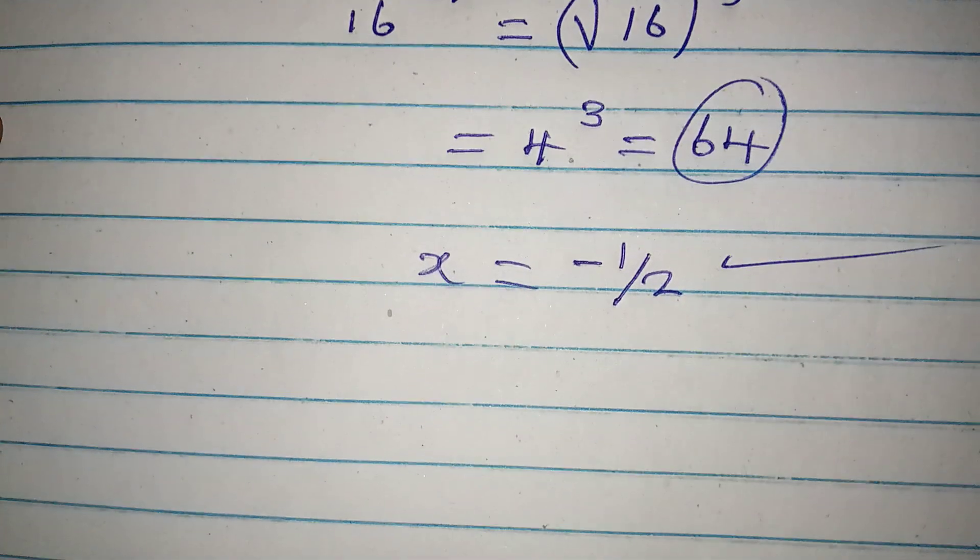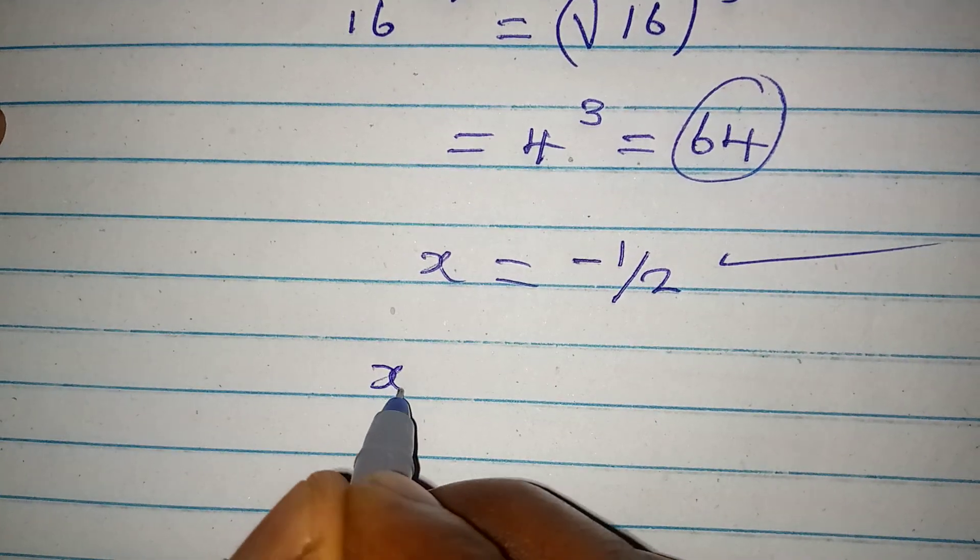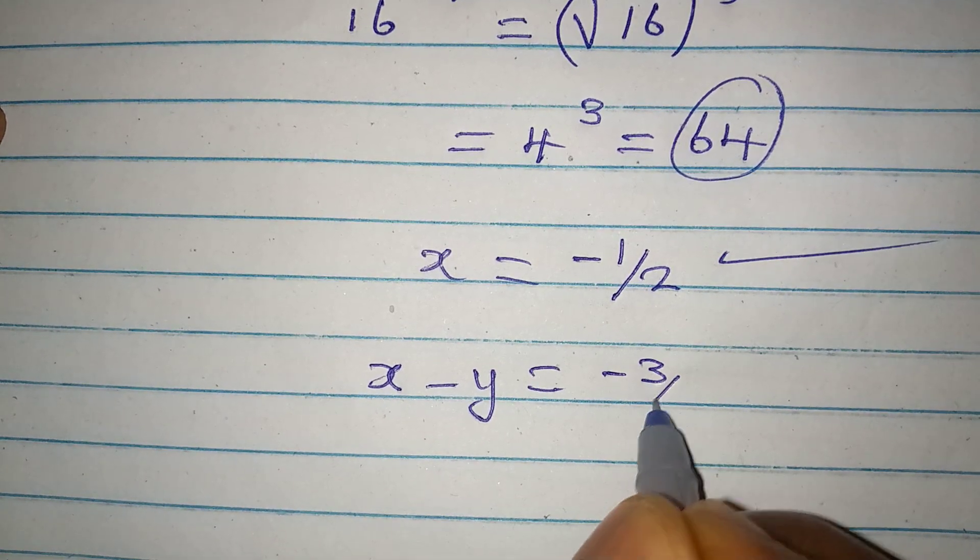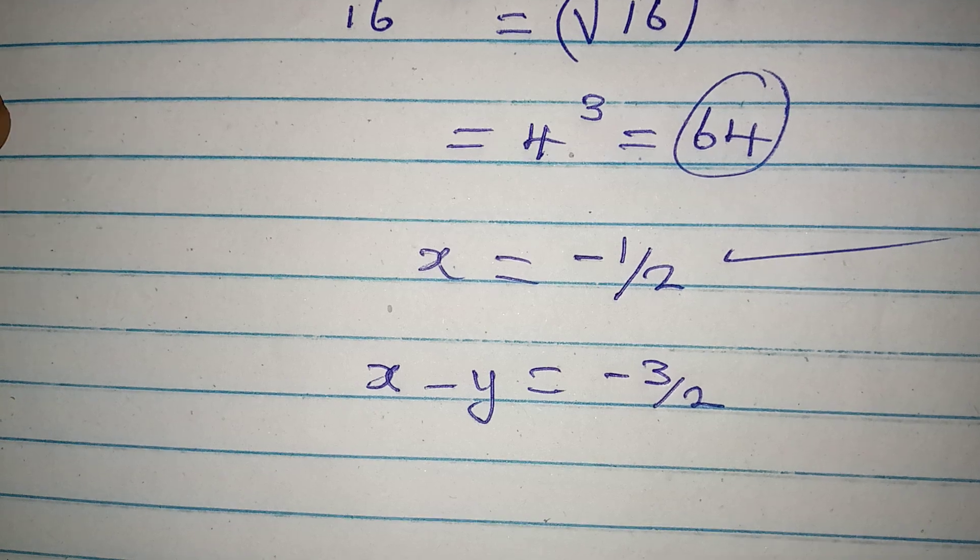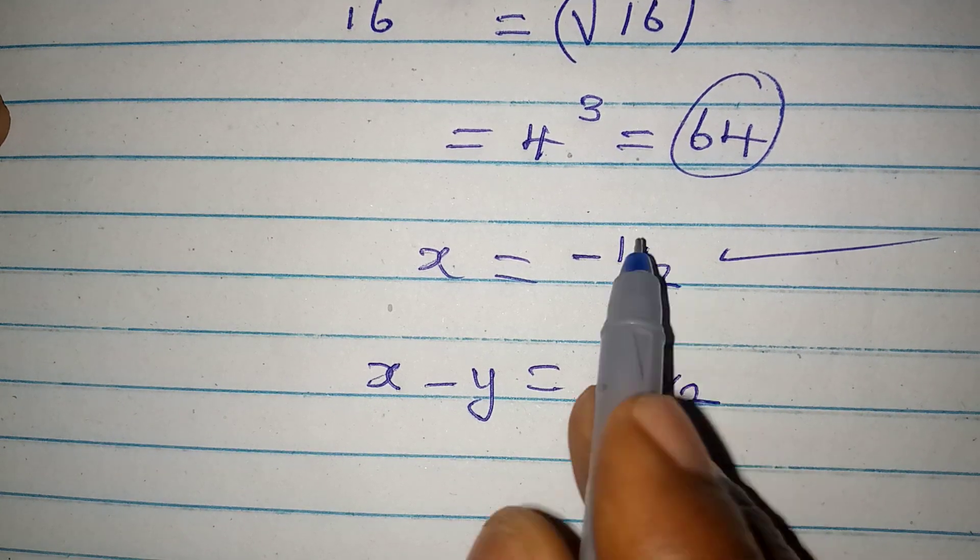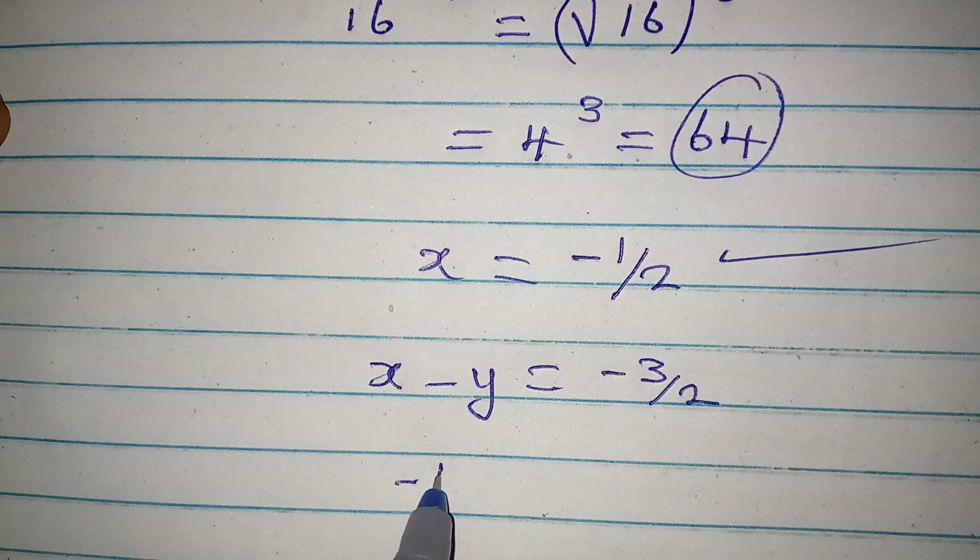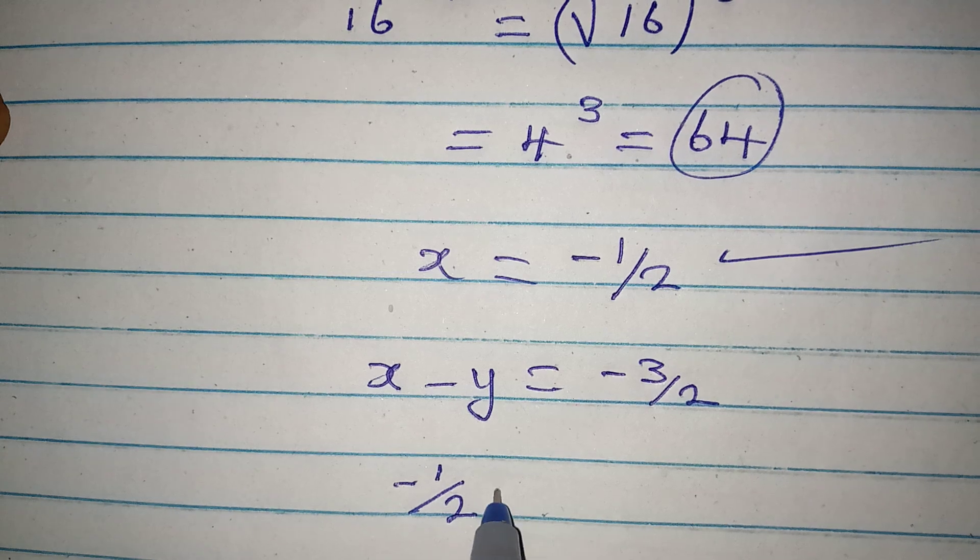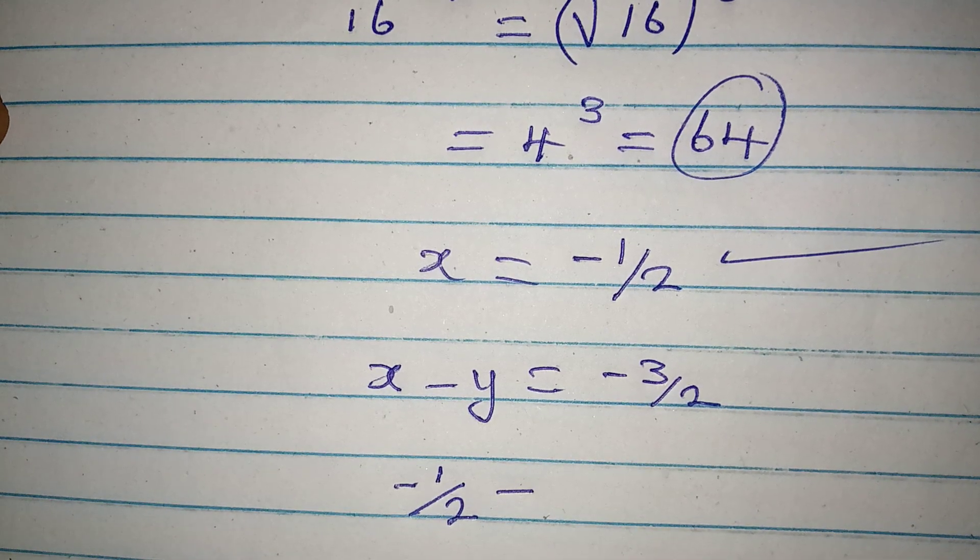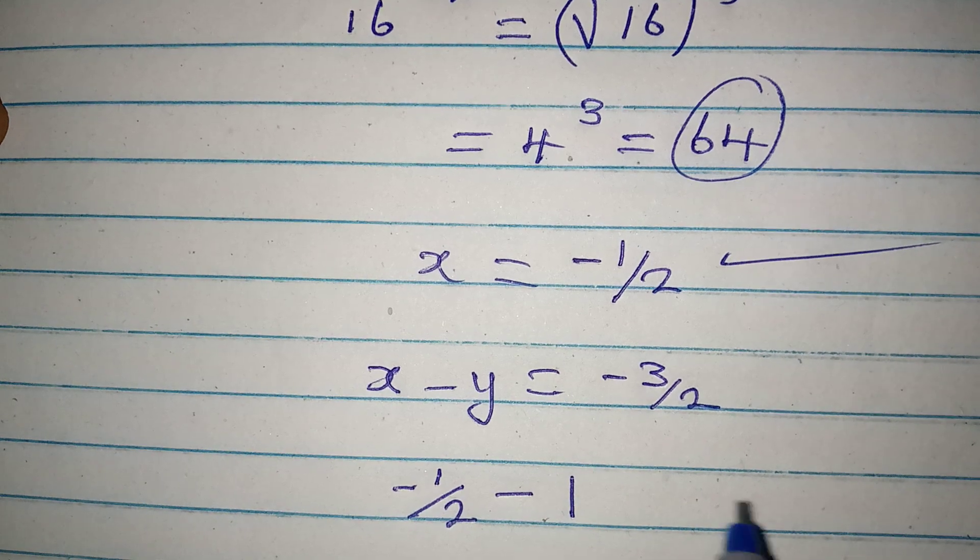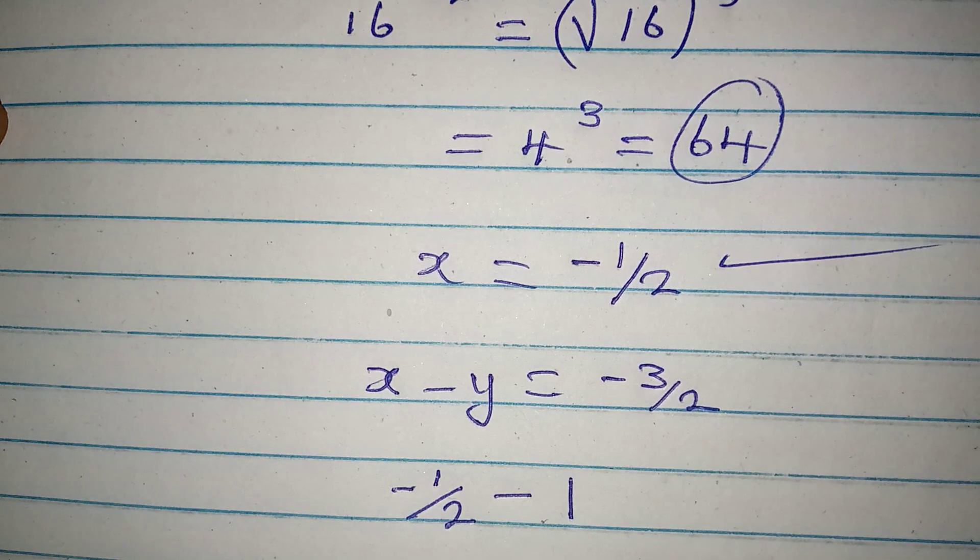Now let's get the second equation, which is x minus y equal to minus 3 over 2. Now what is the value of x? Put it in, minus 1 over 2. Then minus, what is the value of y that we got? 1. So put in 1 for your y. Will this give negative 3 over 2?